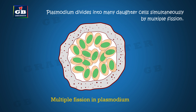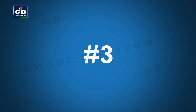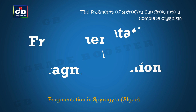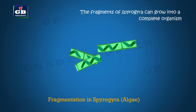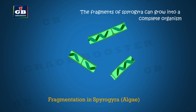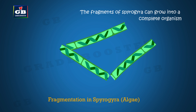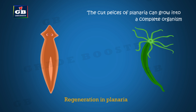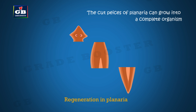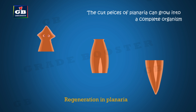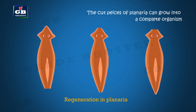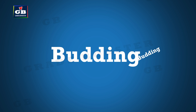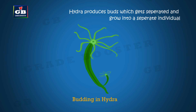Fragmentation: Spirogyra and algae break into fragments and each fragment grows into a new organism — this mode is called fragmentation. Regeneration: Planaria and Hydra, if these organisms are cut into pieces, each piece can grow into a complete individual. This is called regeneration.